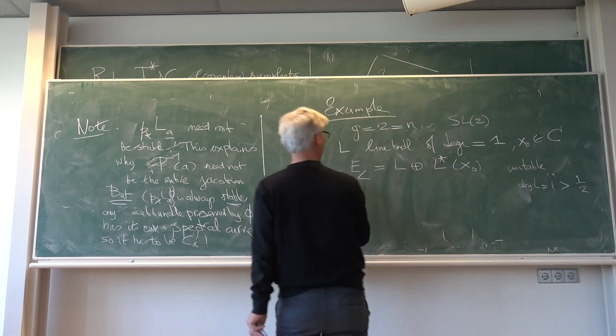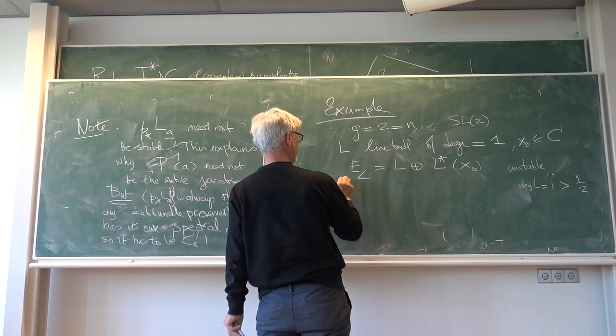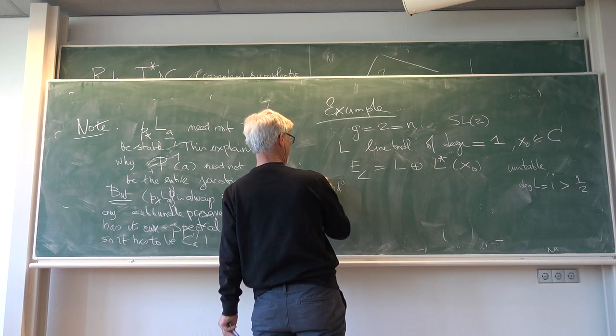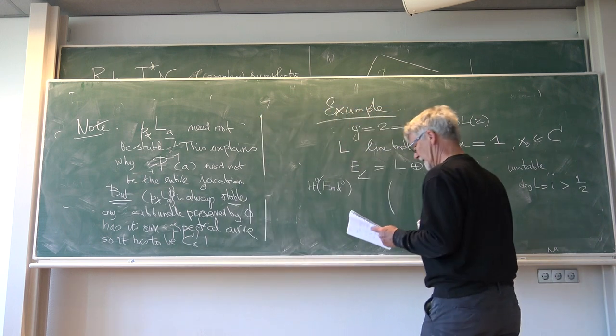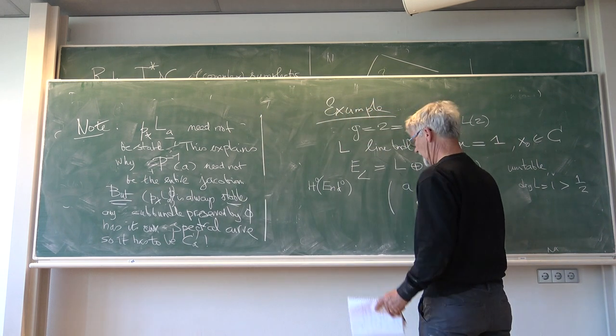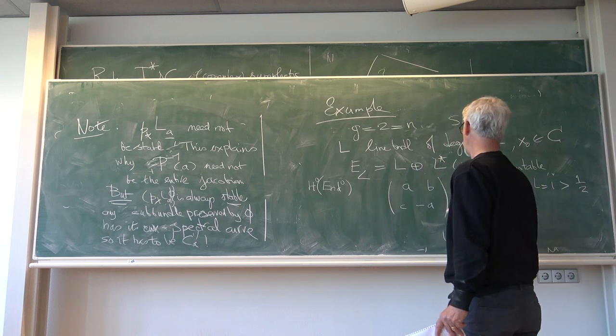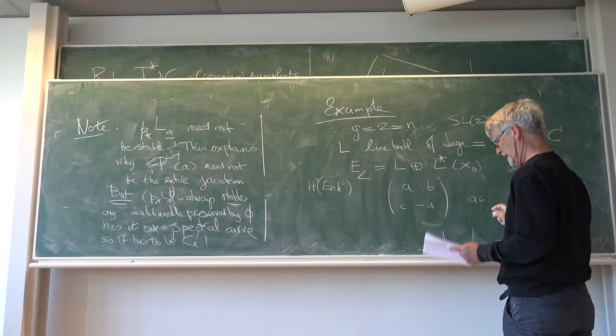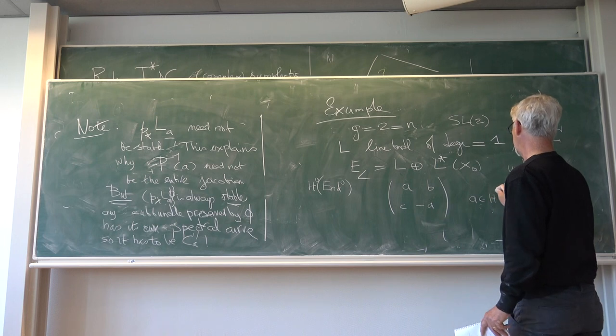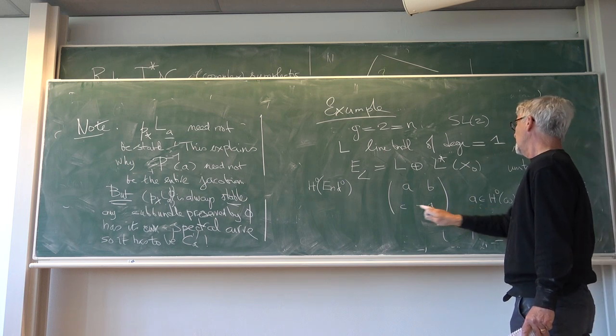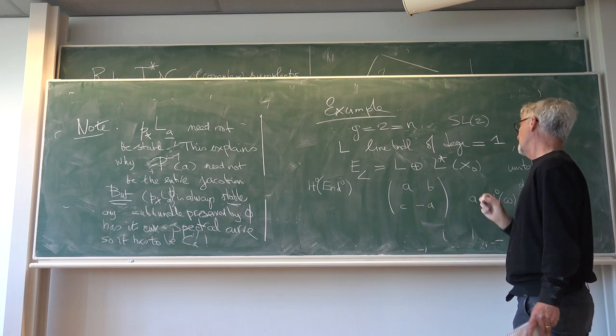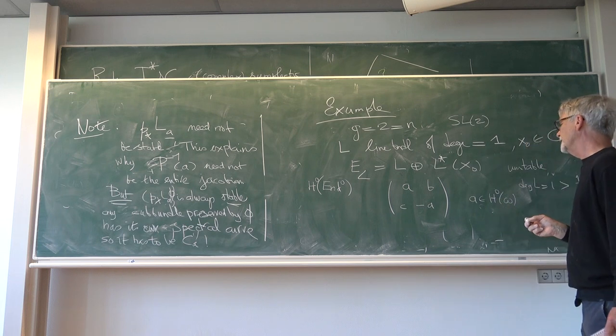However, if I look at the traceless endomorphisms, the global traceless endomorphisms, they look like A, B, C, minus A, where A as before varies in the H0 omega. But B and C, they vary in certain line bundles, which you can make explicit.